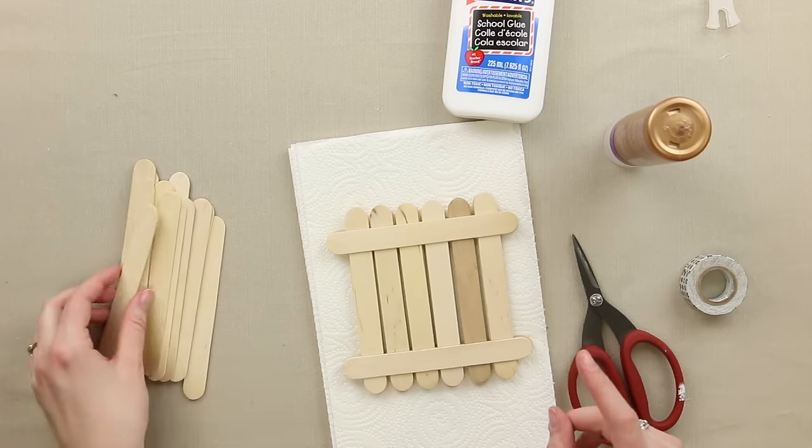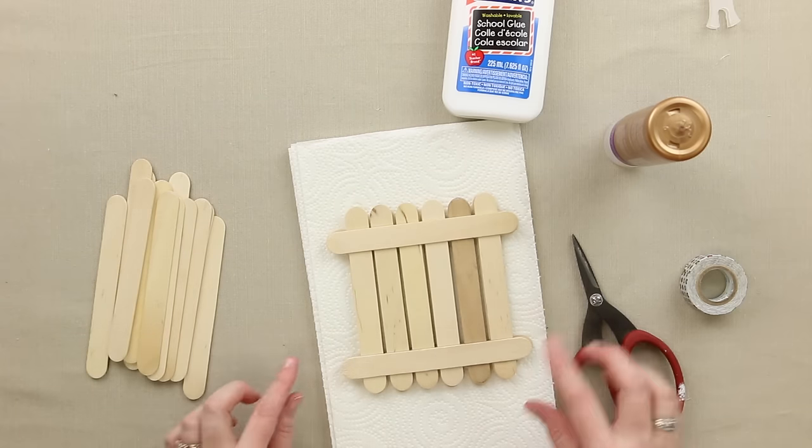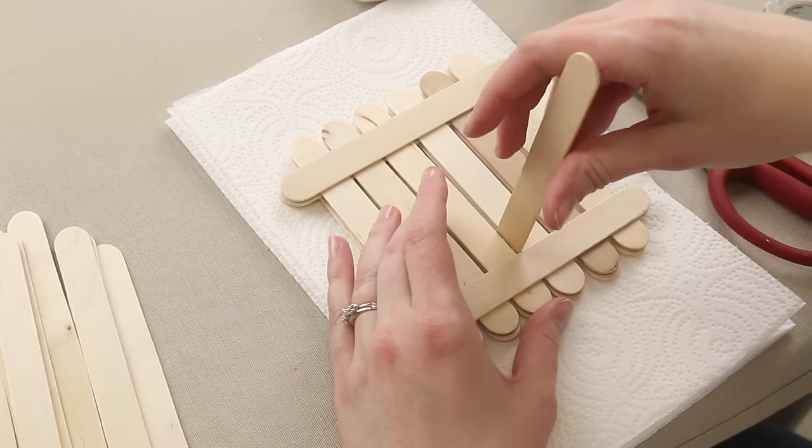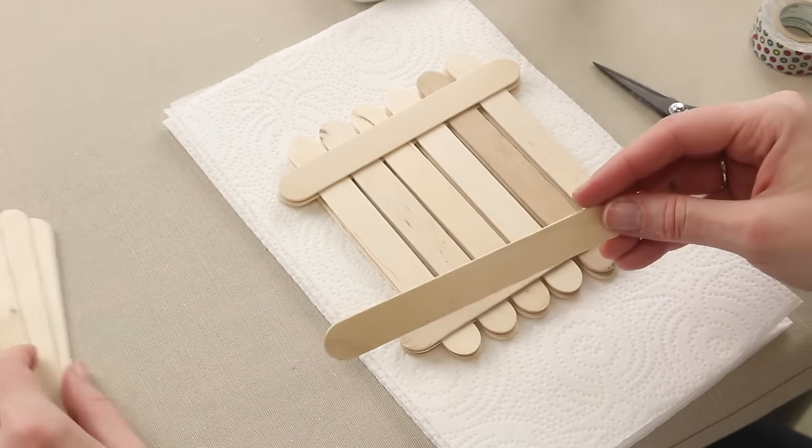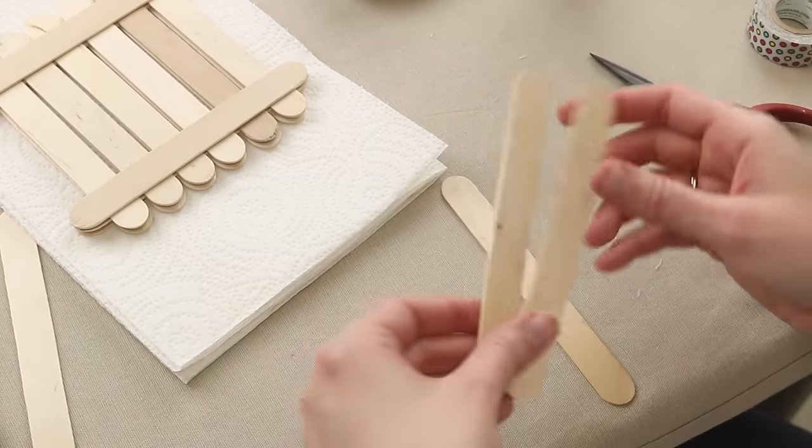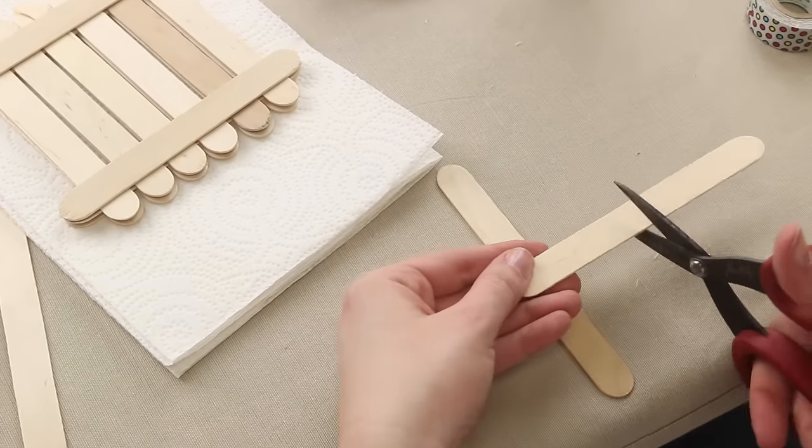The other thing you can do is create a little sail if you want to put on your raft and it's going to go right in here. So what I usually do is take the popsicle stick, I'm going to move this out of the way for a second. And I take a second popsicle stick and just cut it in half.